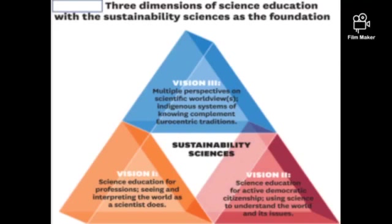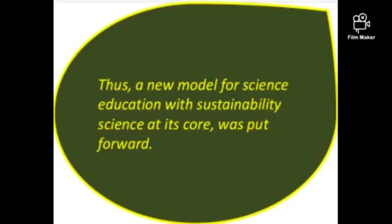Three visions of science education were identified with sustainability sciences as the foundation. Vision one: science education for professions — seeing and interpreting the world as a scientist. Vision two: science education for active democratic citizenship — using science to understand the world and its issues. Vision three: multiple perspectives on scientific world views — indigenous systems of knowing complementing Eurocentric traditions. A new model for science education with sustainability science at its core was put forward.